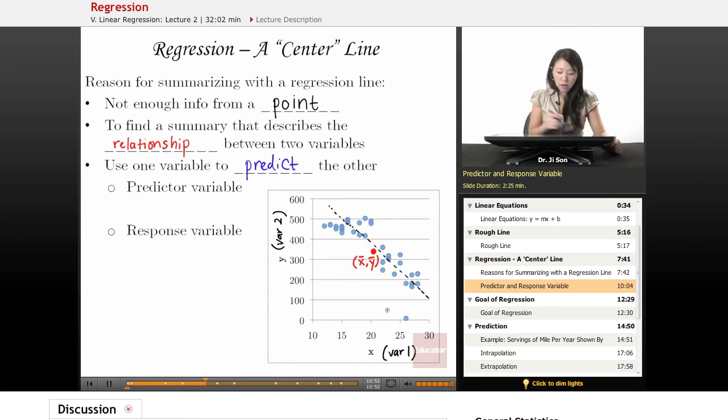And that second variable is called the response variable. And so one thing that's important to know is that the predictor variable by convention, by just tradition, goes on the x-axis. And the response variable is often portrayed on the y-axis.